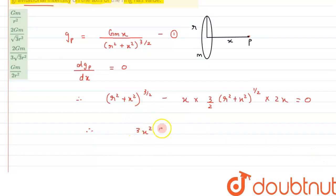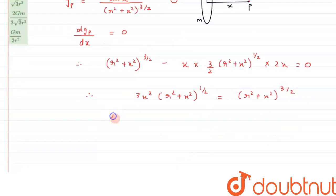3X² (R² + X²) raised to 1/2 equals (R² + X²) raised to 3/2. This can be written as R² + X² raised to 1/2 and raised to 3/2.